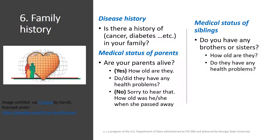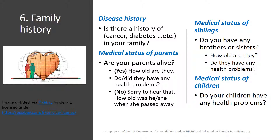Again, the first question is: Do you have any brothers or sisters? If the answer is yes, you come up with the follow-up questions: How old are they? Do they have any health problems? Etc. And once you are done with the brothers and sisters, you move to the children.